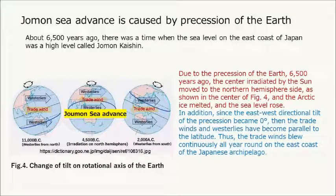The Jomon sea advance was caused by precession of the Earth. About 6,500 years ago, the sea level on the east coast of Japan was at a high level called Jomon Kaishin. Due to the precession of the Earth, 6,500 years ago the center irradiated by the sun moved to the northern hemisphere side, the Arctic ice melted, and the sea level rose. In addition, since the east-west directional tilt of the precession became zero degrees, the trade winds and westerlies became parallel to the latitude, and trade winds blew continuously all year round on the east coast of the Japanese archipelago.